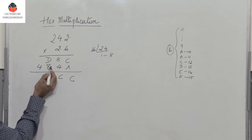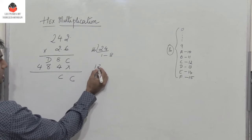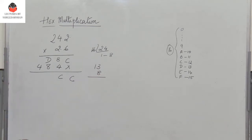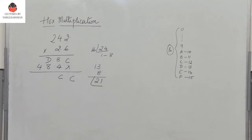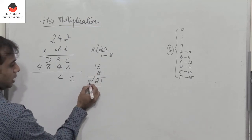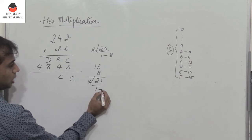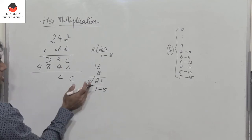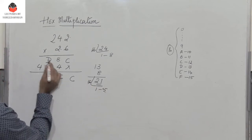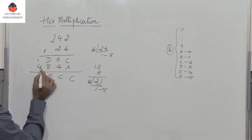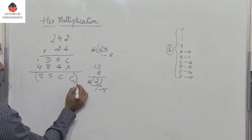8 plus 4 is again 12 which is C. Then you have D plus 8. D is 13, 8. So what do I get? I get 21. So 21 is a number which is greater than 15. So again I divide it by 16. So I get 1, 5. So representation of 21 in hex is 1, 5. So I write 5 with a 1 carry. So 4 plus 1 is 5. So this is the answer.